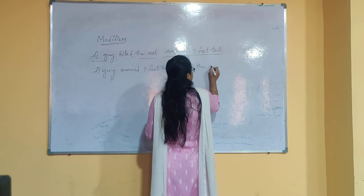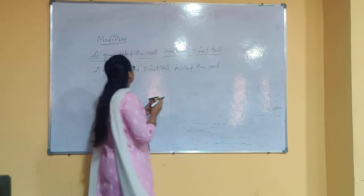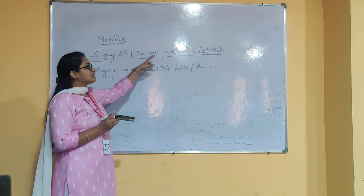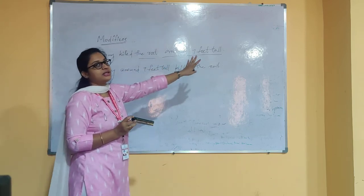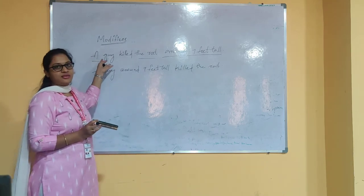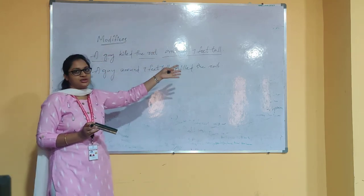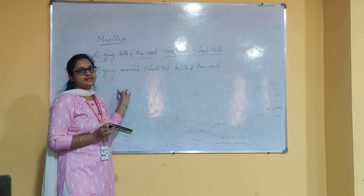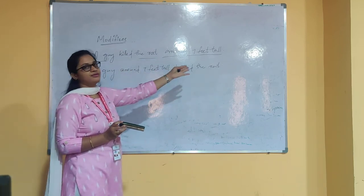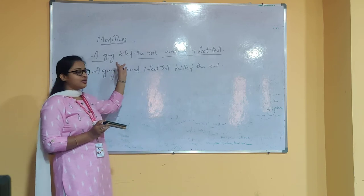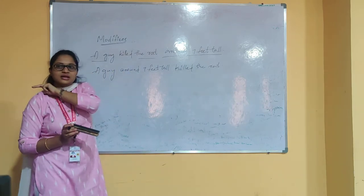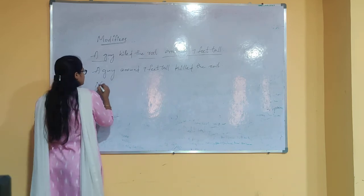In the first sentence it gives the meaning that the rat is seven feet tall, but a rat cannot be seven feet tall. The guy who is present is seven feet tall. That is what the sentence should mean. The first sentence incorrectly shows the rat as seven feet tall — we should not let that happen.